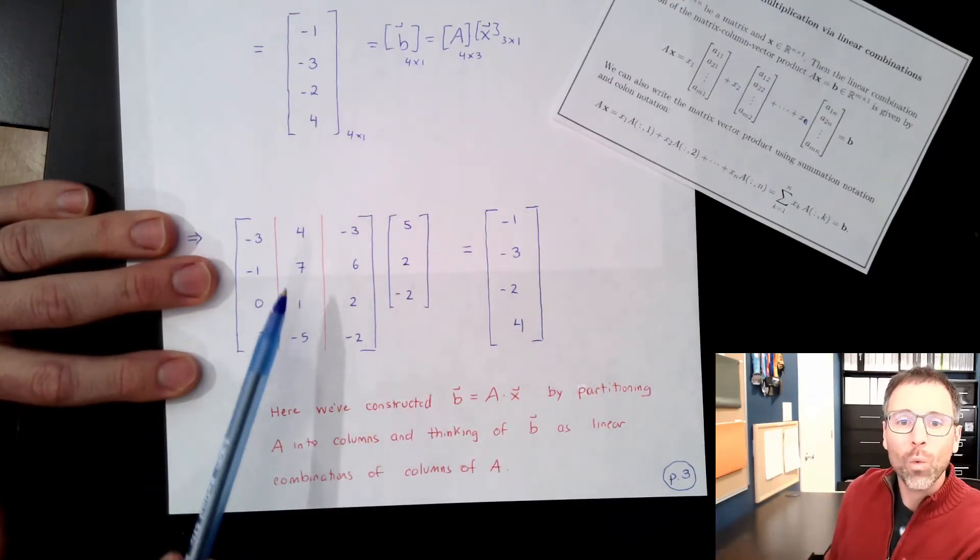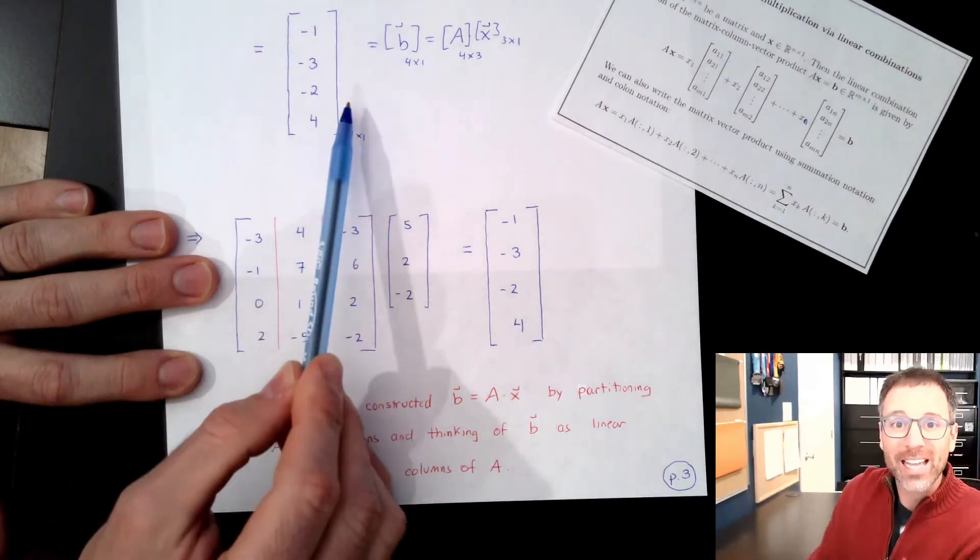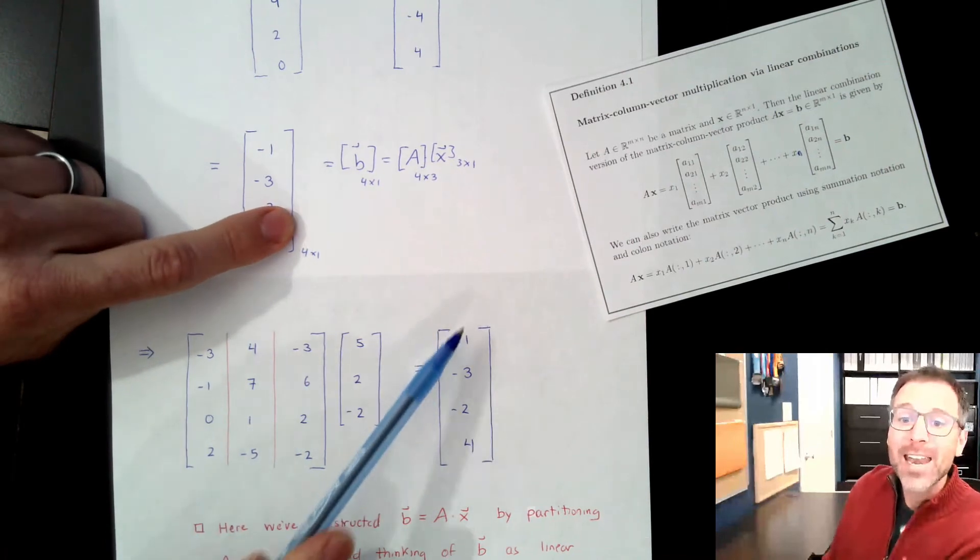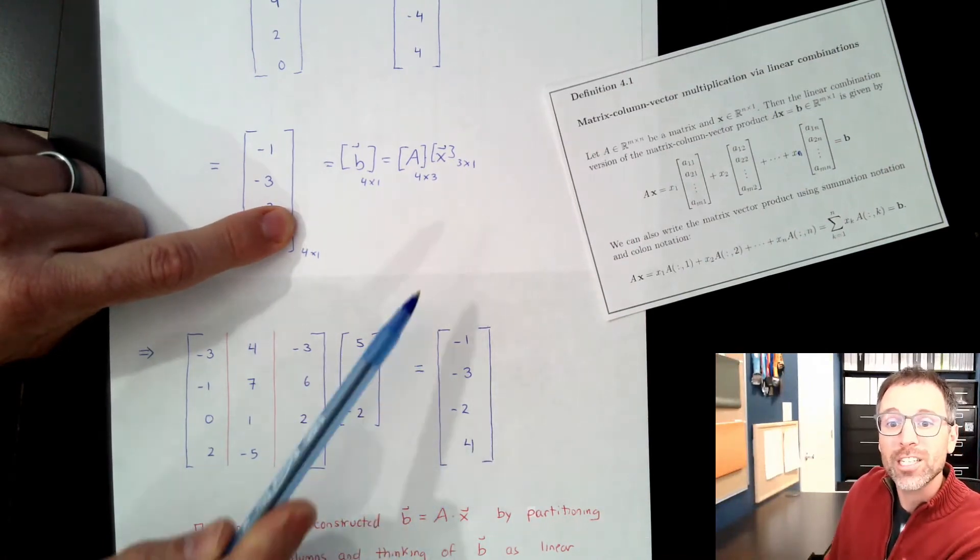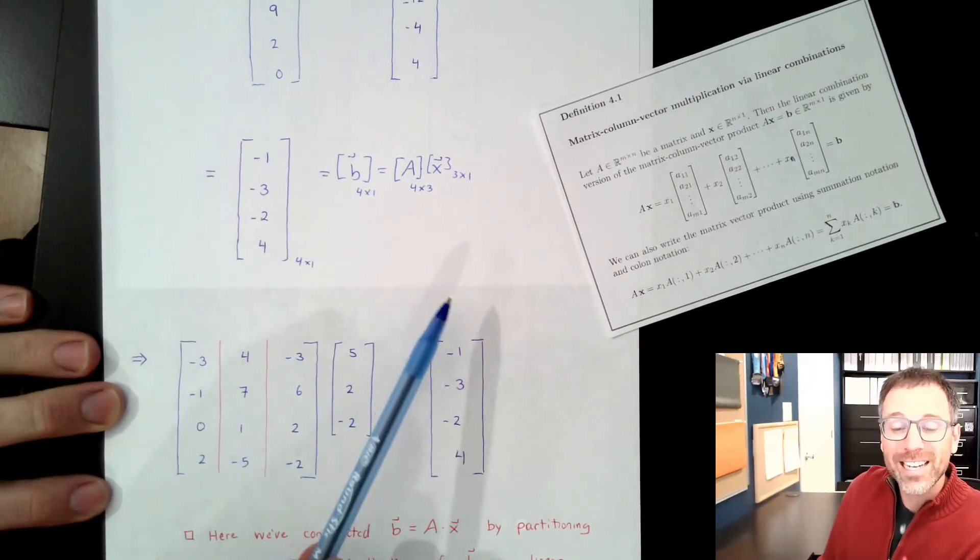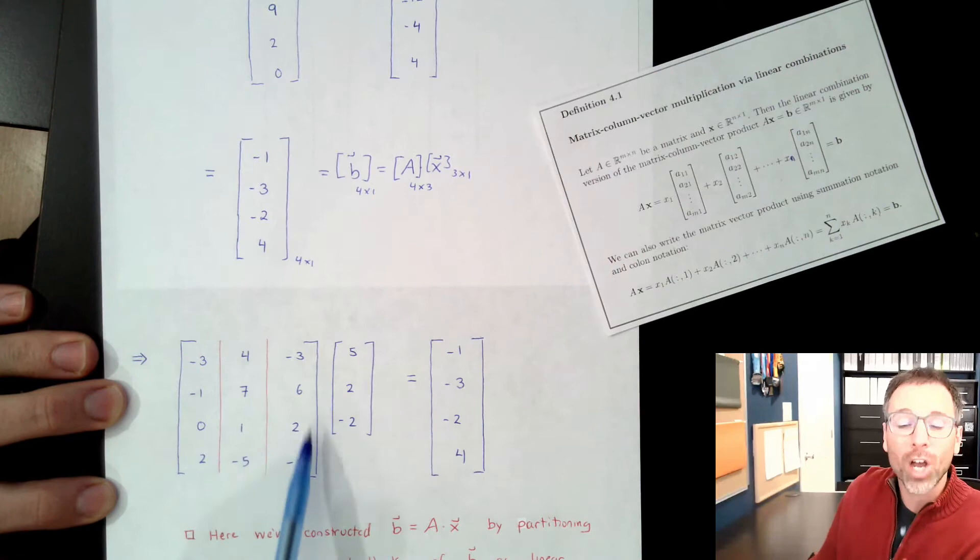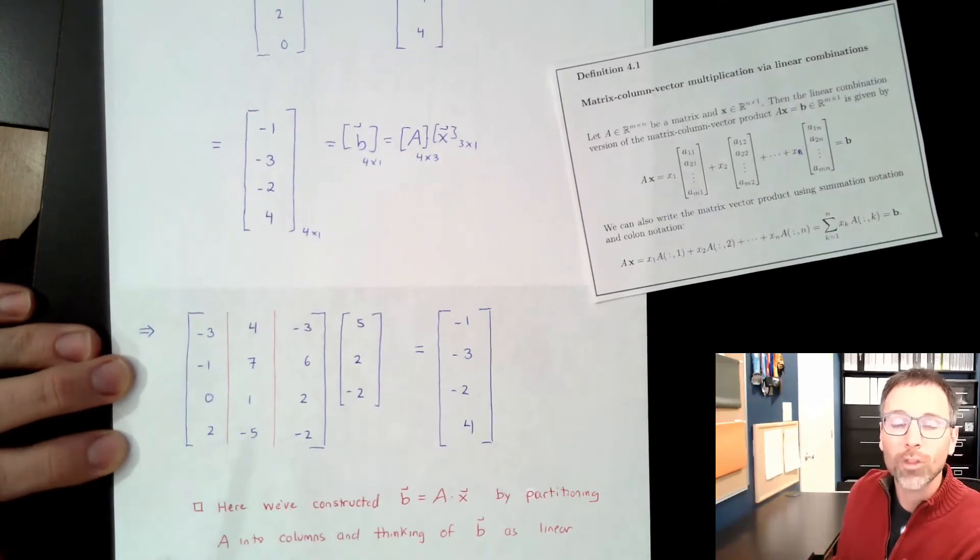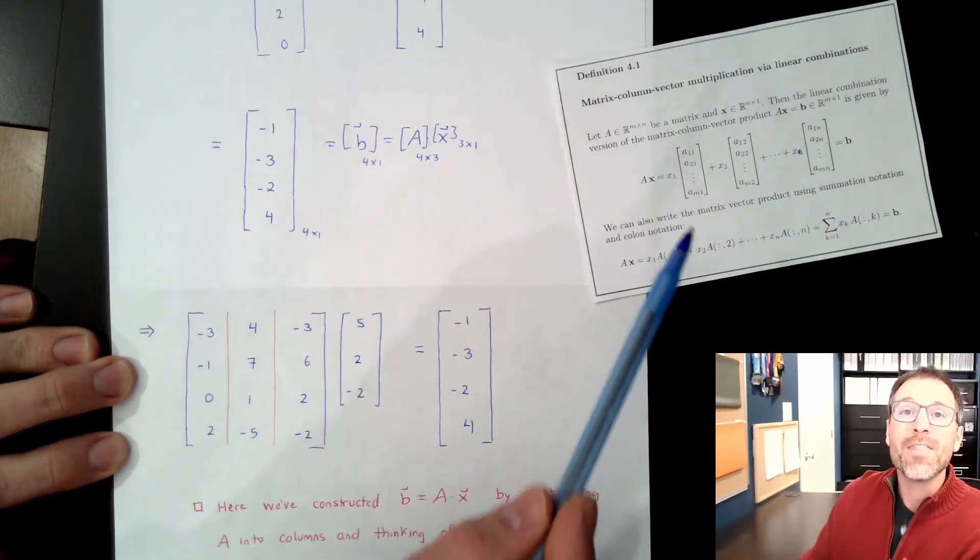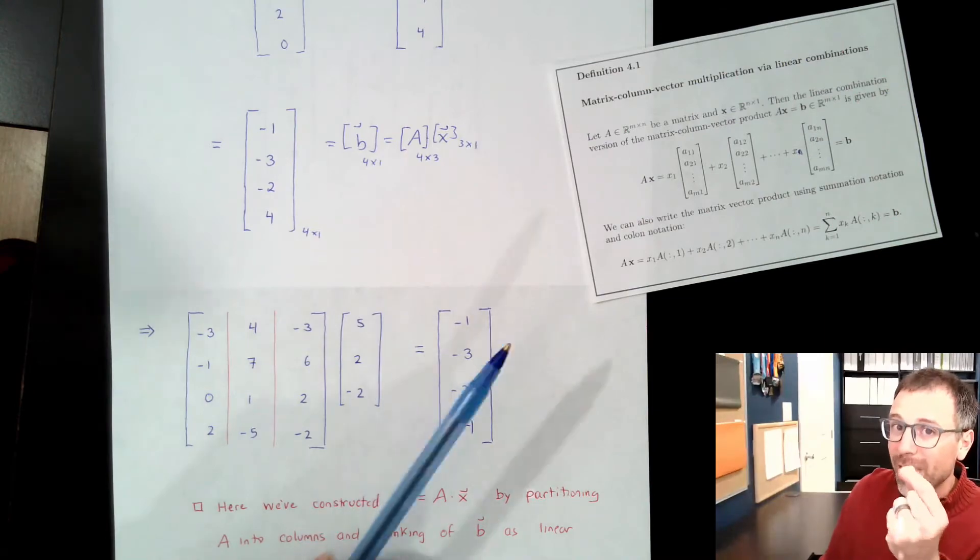Once again, we are constructing the entire vector b in one shot. So we're thinking about the fundamental unit or chunk of information, not as individual entries, but as vectorized information. So the entire vector b is equal to the linear combinations of the columns of A with scalar multiples from the individual entries of x. So in this form, the information is vectorized. It's not scalarized. It's not individual scalars. It's entire vectors.